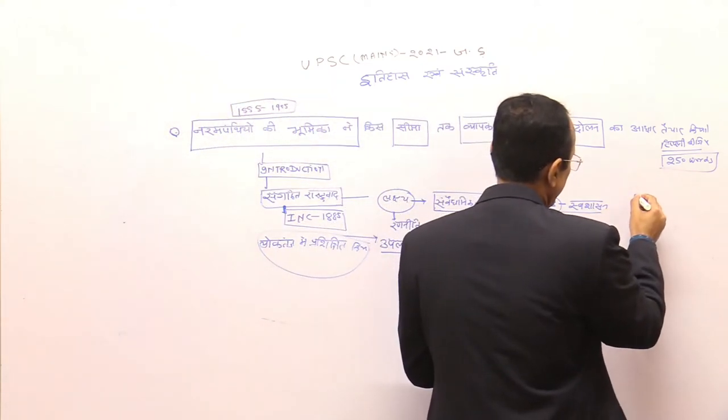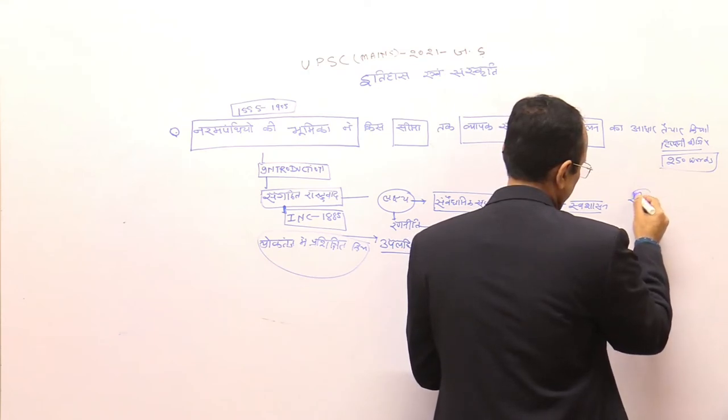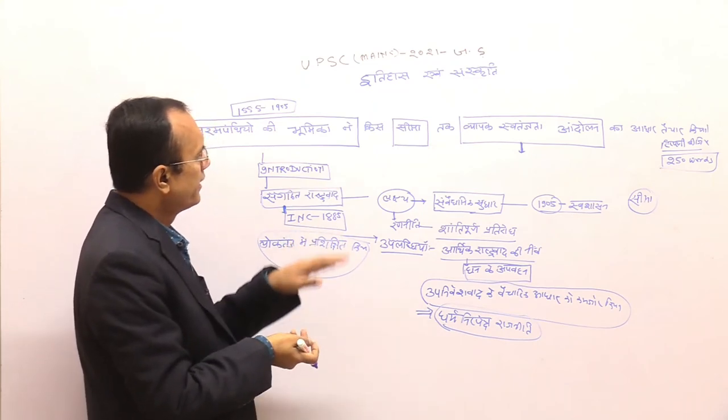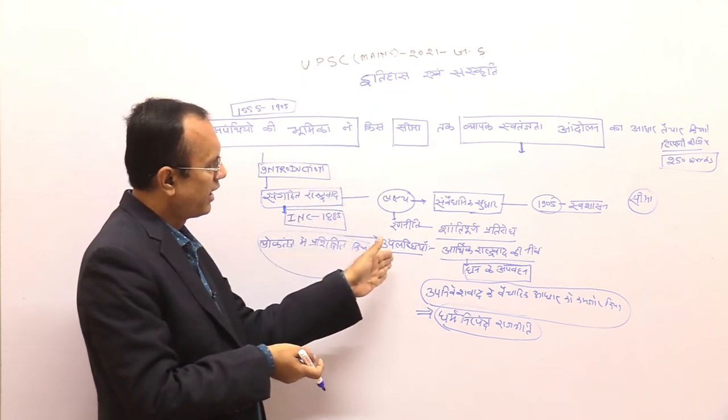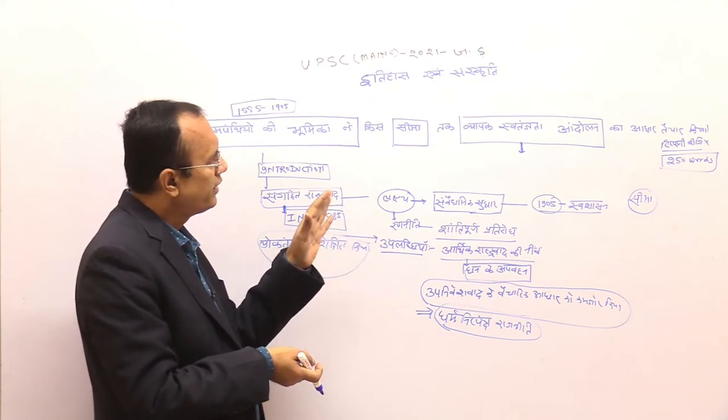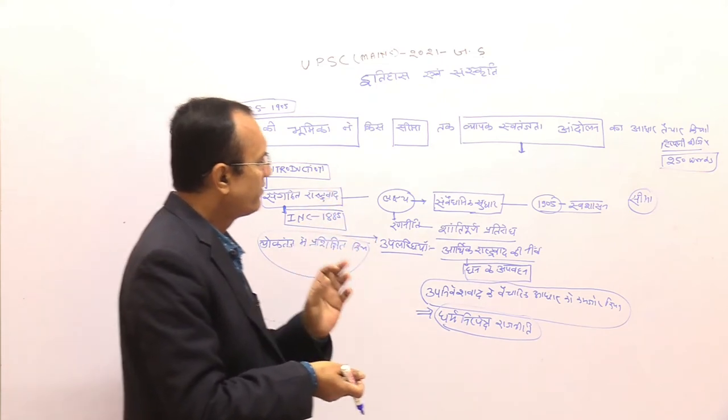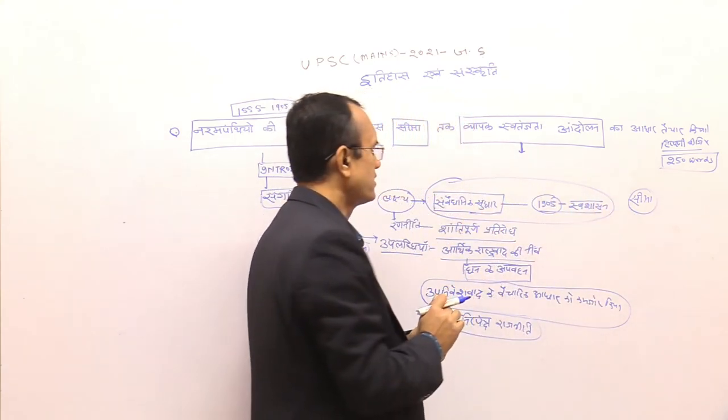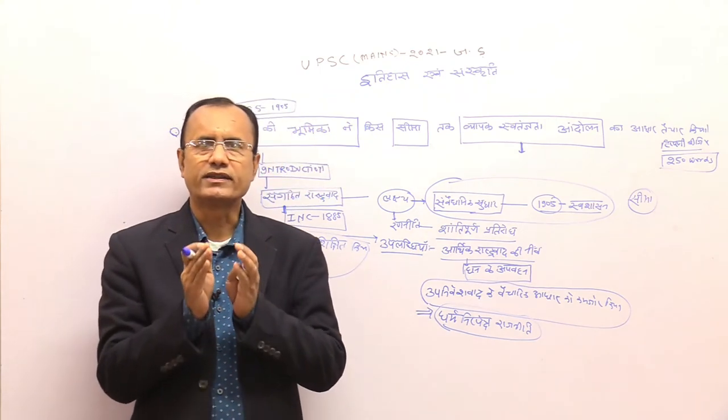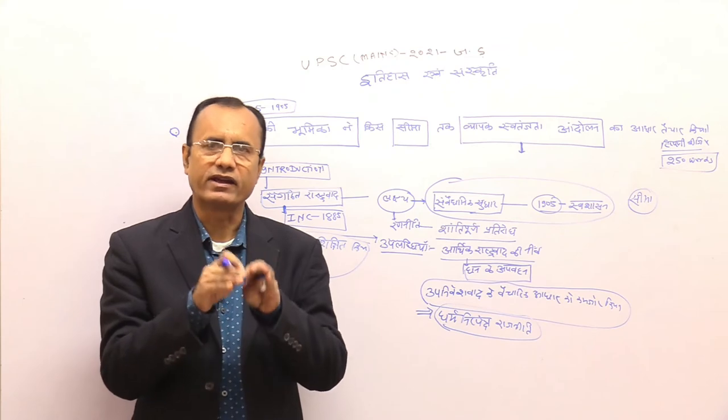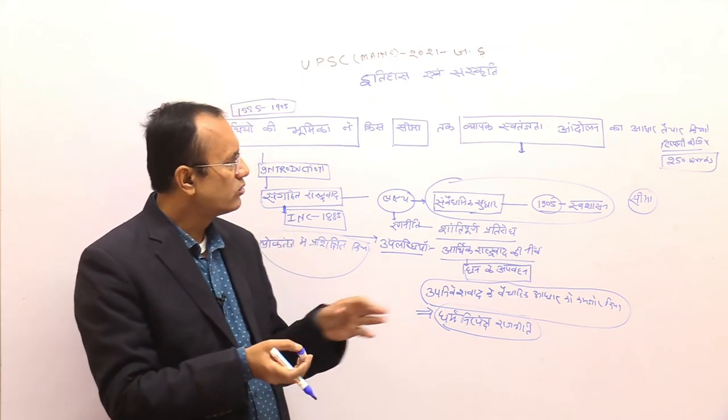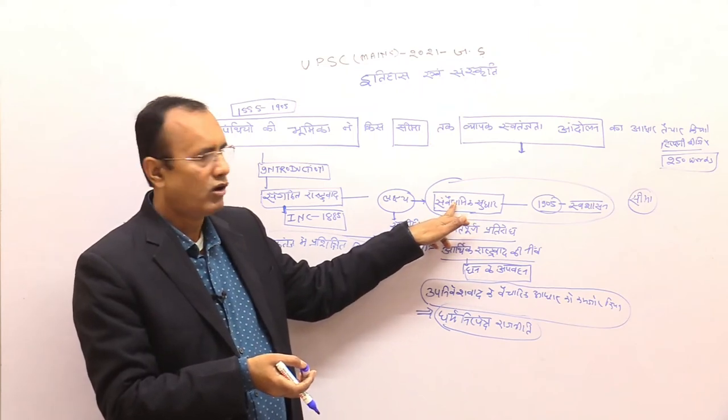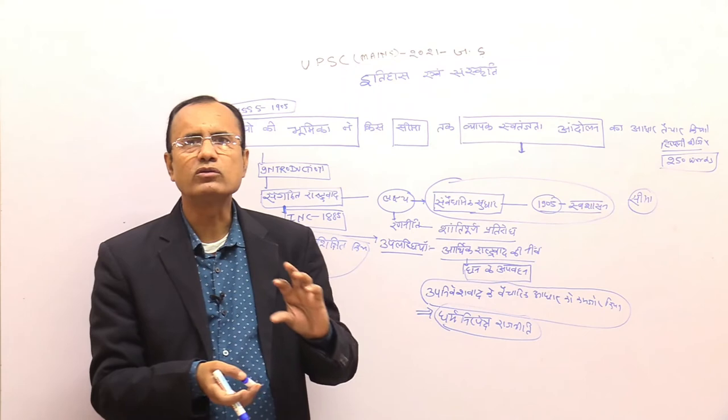दूसरा जो इसका portion है कि सीमा। इनकी सीमा है क्या थी कि किस सीमा तक यह तैयार कर रहा है तो इनकी कुछ limitations है। इनकी first जो limitations तो यह थी कि इनकी जो target जो शुरू की target थी संवैधानिक सुधार एक तरफ से आर्थिक रूप से इन्होंने उपनिवेशवाद की वैज्ञानिक व्याख्या प्रस्तुत की लेकिन दूसरी तरफ और संवैधानिक सुधार उससे मांग कर रहा आवेदन निवेदन प्रतिवेदन भीख मांगते की राजनीति और इसका प्रतिफल हुआ कि इन्हें कोई बहुत विशेष लाभ नहीं मिला पहली चीज।